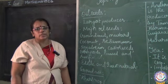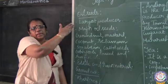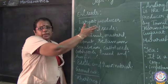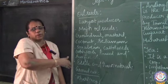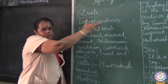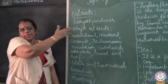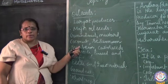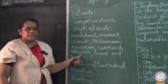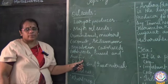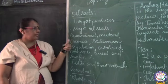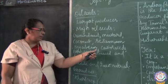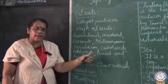Now we are going to discuss oil seeds. India is the largest producer of oil seeds. The major oil seeds produced in our country are groundnuts, mustard, coconut, sesame, soya bean, castor seeds, cotton seeds, linseed and sunflower.